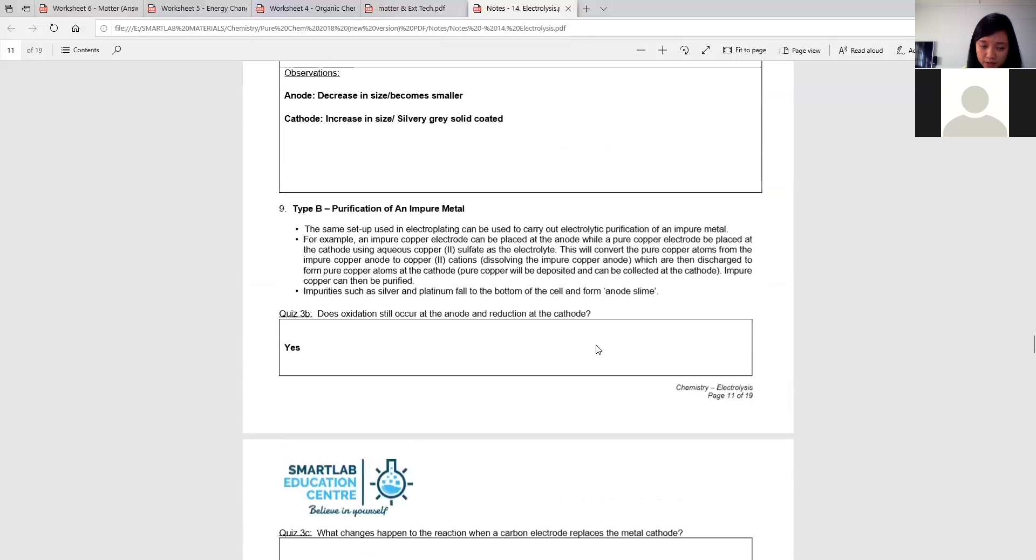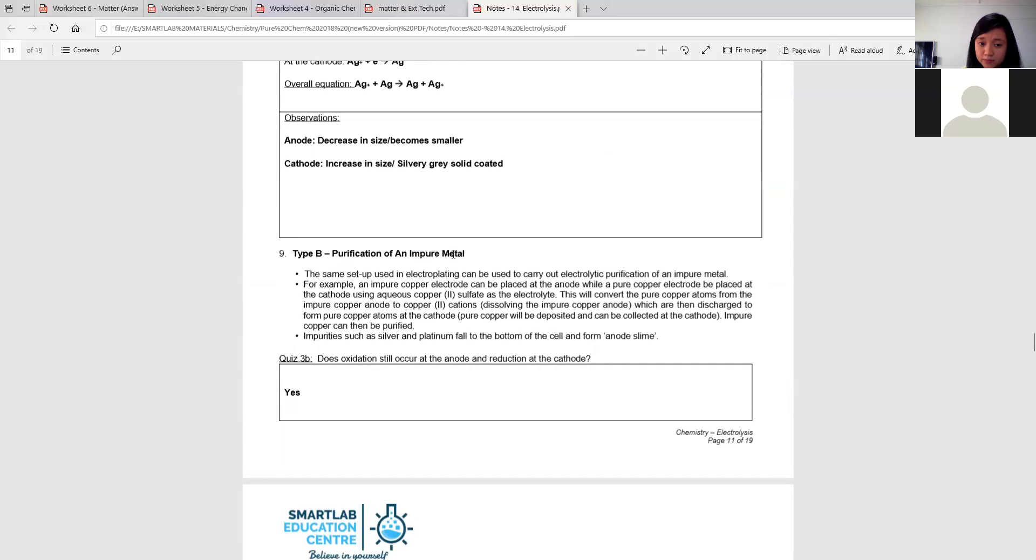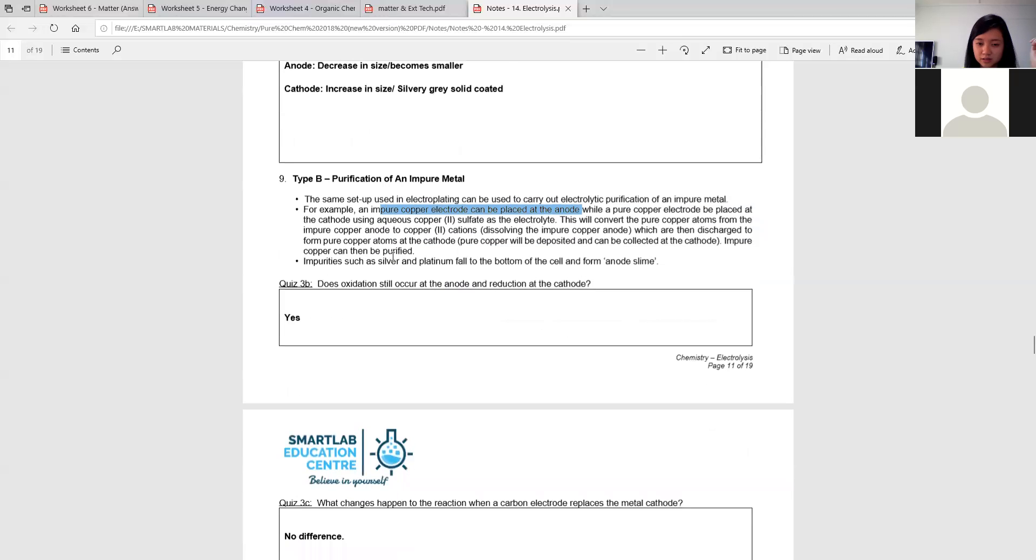If you are trying to purify an impure metal, it's the same thing. The metal that is impure, you want it to break down, so that the correct metal will go over the other side and become a pure metal. So the impure metal, you must put it at the anode, because you want it to break down, to oxidize, lose electrons to give you back your metal ions. Then the one that is pure will be at the cathode because cathode will never break down, it will be reduction, metals will not go through reduction.